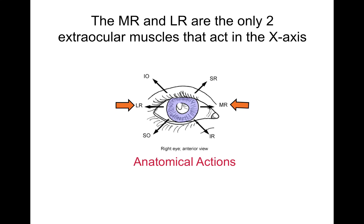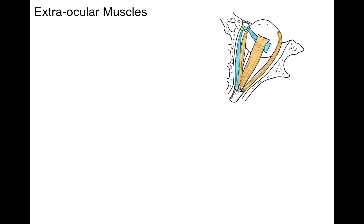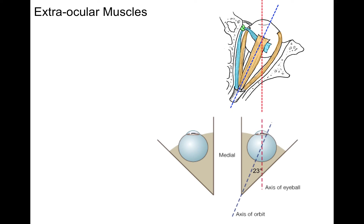That will become important. Here is the anatomical axis, and that's going to become important when you clinically test later on. In this superior view of the right orbit, the red dotted line represents the axis of gaze and the blue line represents the axis of the actual extraocular muscles themselves. The axis of the eyeball and the axis of the orbit are off by 23 degrees. This is going to be important in understanding the actions of these other muscles.